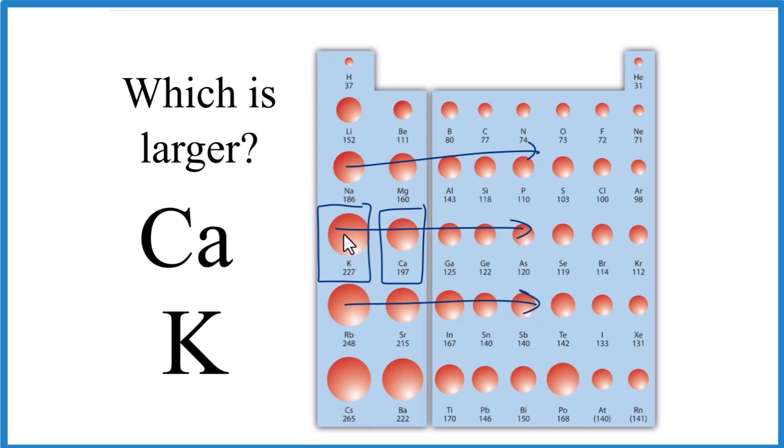So we can see we're going across here. Calcium, that's after potassium. So since potassium is further to the left, that's the larger atom, has a larger atomic radius.